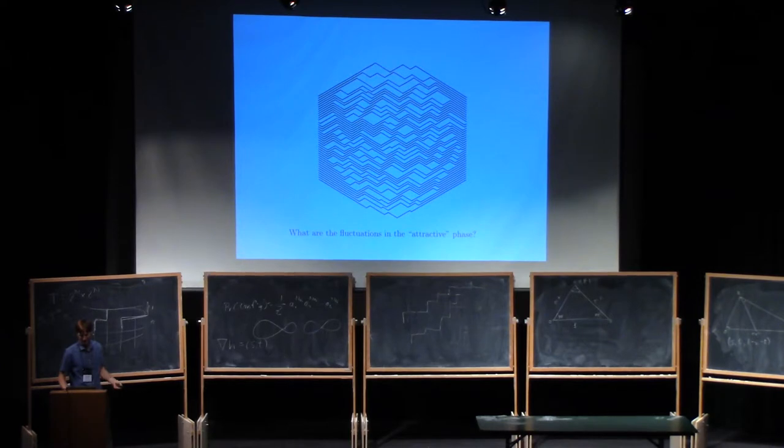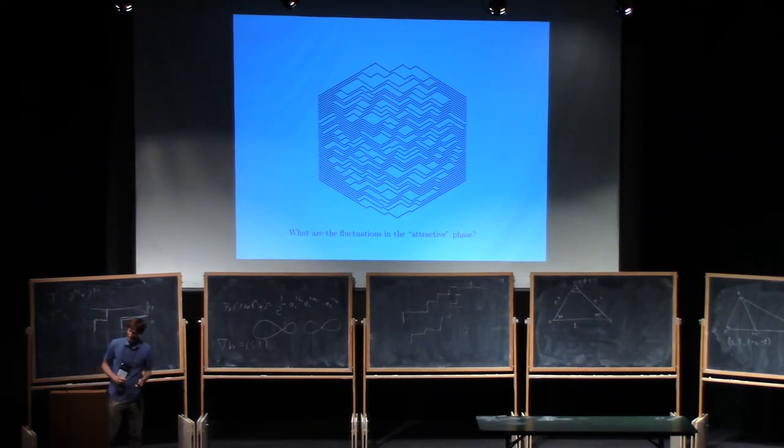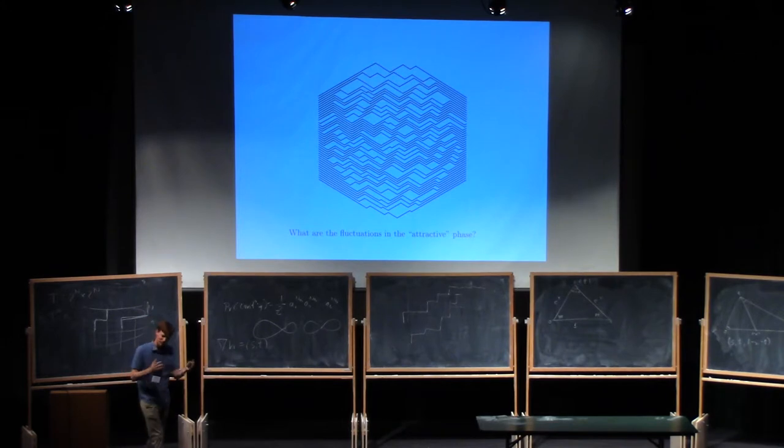Okay. Well, I have one more result to present, if I have time. Okay. It's just a couple slides. What about the fluctuations in the attractive phase? Which is not to say that I understand the fluctuations in the repulsive phase, but physicists will tell me that there are Gaussian free field fluctuations in the repulsive phase. But in the attractive phase, something interesting happens. Here's an actual simulation again.